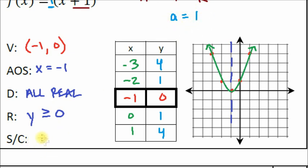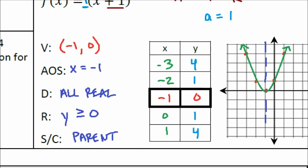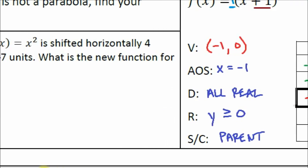You can write 'neither' for stretch or compression, or note that this is the shape of the parent graph. When a equals one the graph is neither stretched nor compressed — it's the normal shape.